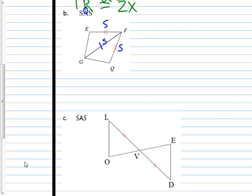So now we need the angle. Well, which angle do we need? We need the angle that's in between the two sides. So we need this angle, which is angle EFG, is congruent to this angle, which will be angle QFG.